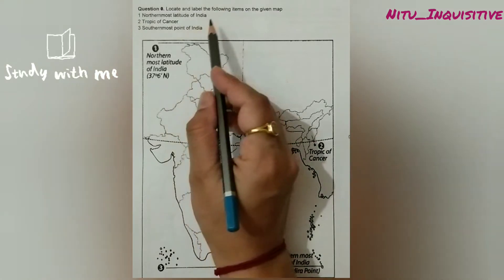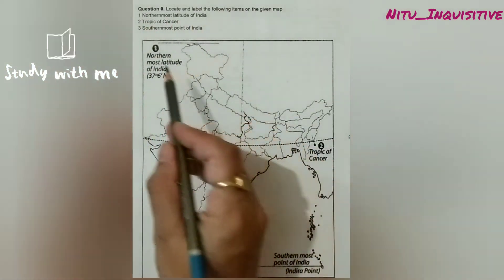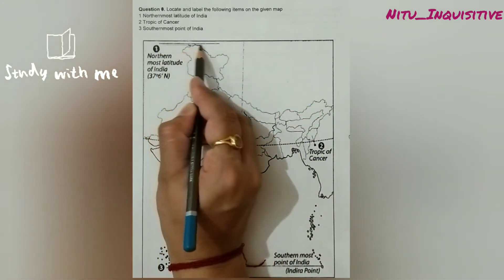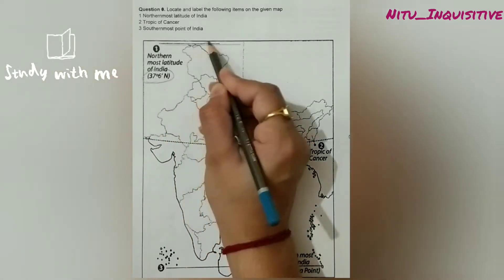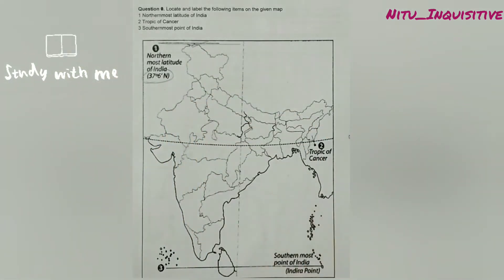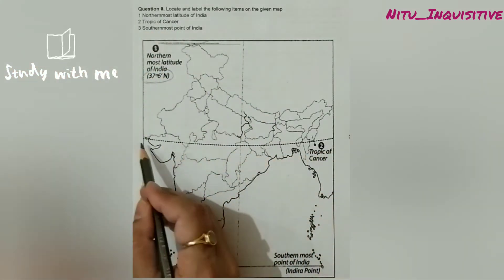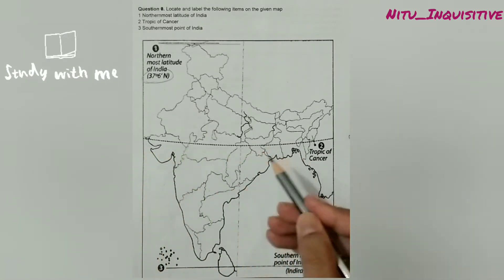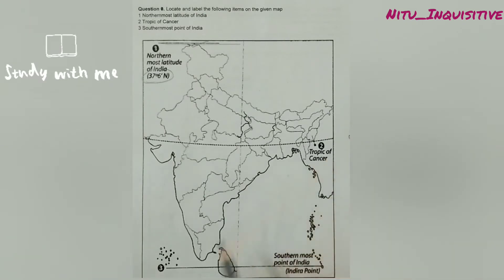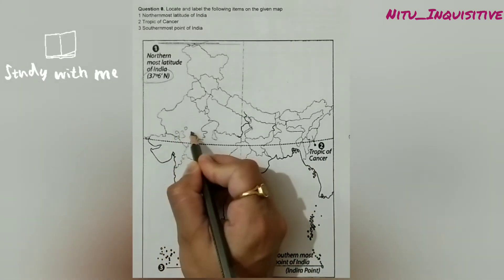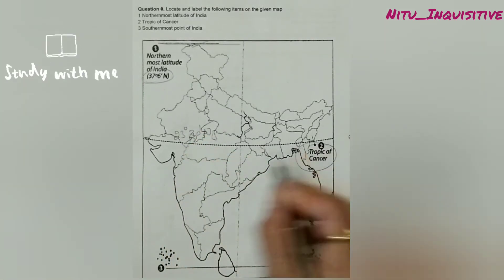The next question is: locate and label the following items on a given map. The first question is the northernmost latitude of India. The northernmost latitude of India is 37 degrees 6 minutes north. Next question is the Tropic of Cancer — a line which passes through India and divides it into almost two equal halves. This line is at 23 degrees 30 minutes north, and it is known as the Tropic of Cancer.